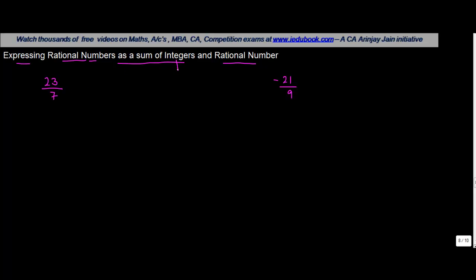How do you convert this number into an integer plus a rational number? Basically, if you see 23 upon 7, what we do is we divide 23 by 7. So you get 3 here, 21 here, put in a subtraction sign — 3 minus 1 is 2, 2 minus 2 is 0.